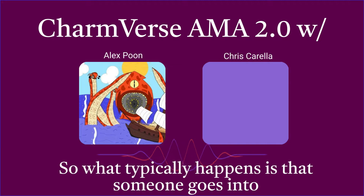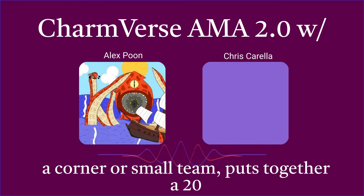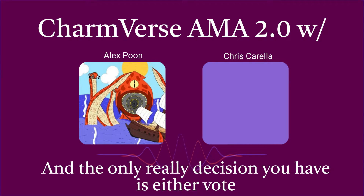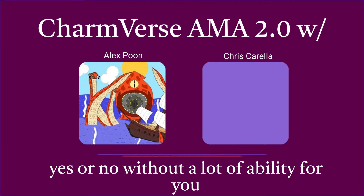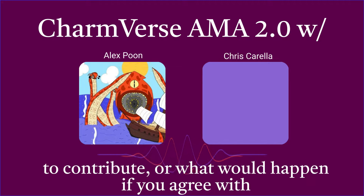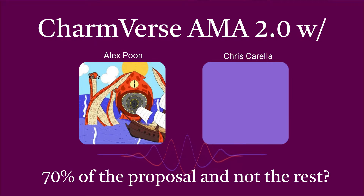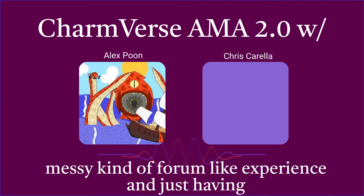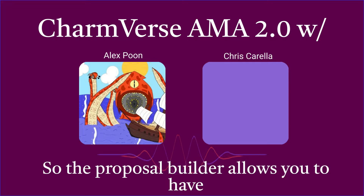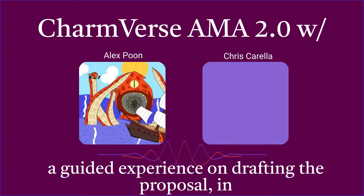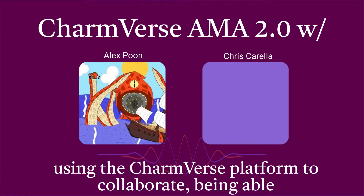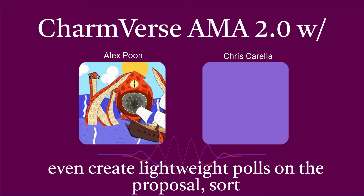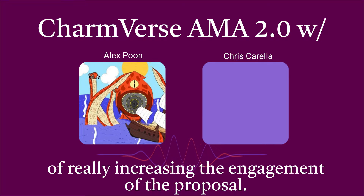What typically happens is that someone goes into a corner or a small team puts together a 20-page proposal, then just shows up and lets people know it's time to vote. The only decision you have is to vote yes or no, without a lot of ability to contribute. What if you agree with 70% of the proposal and not the rest? How can you contribute changes ahead of time without resorting to a messy forum-like experience? The Proposal Builder allows you to have a guided experience drafting the proposal, collaborate on the Charmverse platform, let people comment, suggest changes, or even create lightweight polls on the proposal — really increasing engagement.